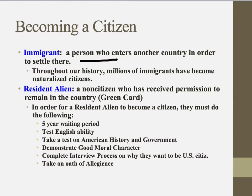What happens is these people come in — do they become a citizen right away? No. Do they have to wait a week or so? No, it's actually quite a lengthy process. First of all, you'll hear of aliens and resident aliens. Resident aliens are non-citizens who have received permission to remain in the country. You may have heard the term 'green card' — they actually have a card that allows them to be in this country legally, and they are not citizens yet.